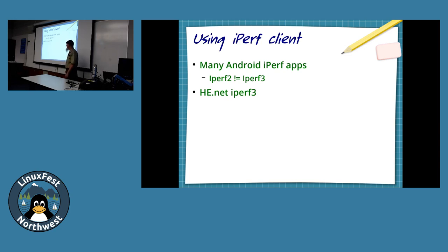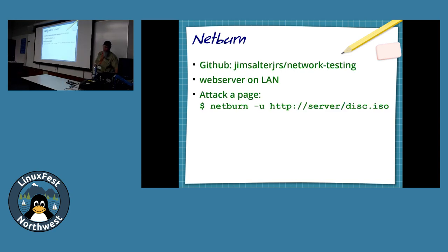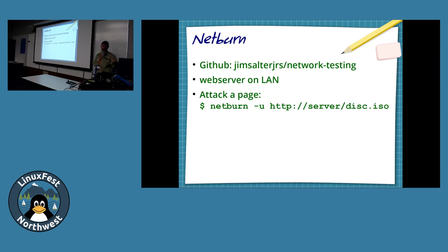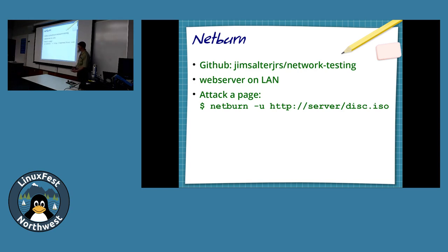HENet supports iPerf2 and iPerf3. Jim Salter — who's presenting elsewhere in the building right now — has a couple of network testing tools on GitHub. Another handy thing when doing speed tests: set up Apache or Nginx and put a couple of ISO files up there. Those take a good long time to download. You could combine that with Netburn — turn Netburn on and download something from Apache on your LAN over Ethernet.